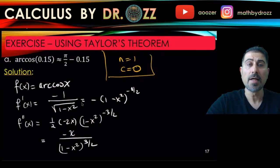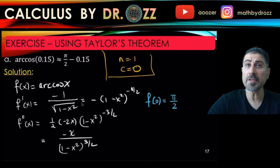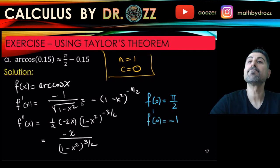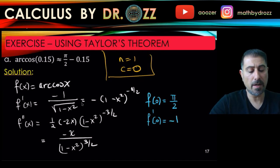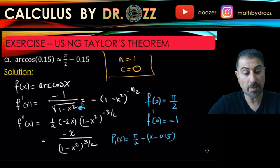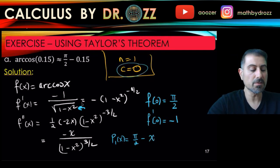If you simplify that, negative x divided by (1 minus x squared) to the 3/2. Alright, all I need is f evaluated at 0. So arccos(0) should be pi over 2. You can use your TI-84 to find arccos(0). And f prime at 0 is in fact negative 1. Because we're having c equals 0.